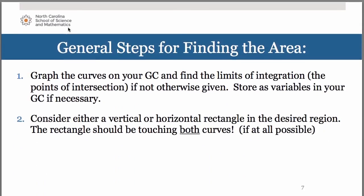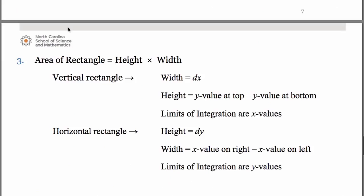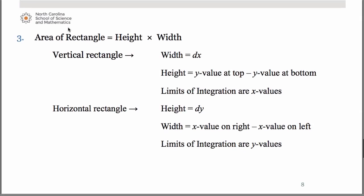So once you've decided if it's going to be a vertical or horizontal rectangle, your guide for deciding that should be that you want the rectangle to touch both curves, if at all possible, because that leads into your then knowing whether it's going to be a dx or a dy problem. If you have a vertical rectangle, your widths are dx's, they're delta x's. That's because the width lies horizontally.